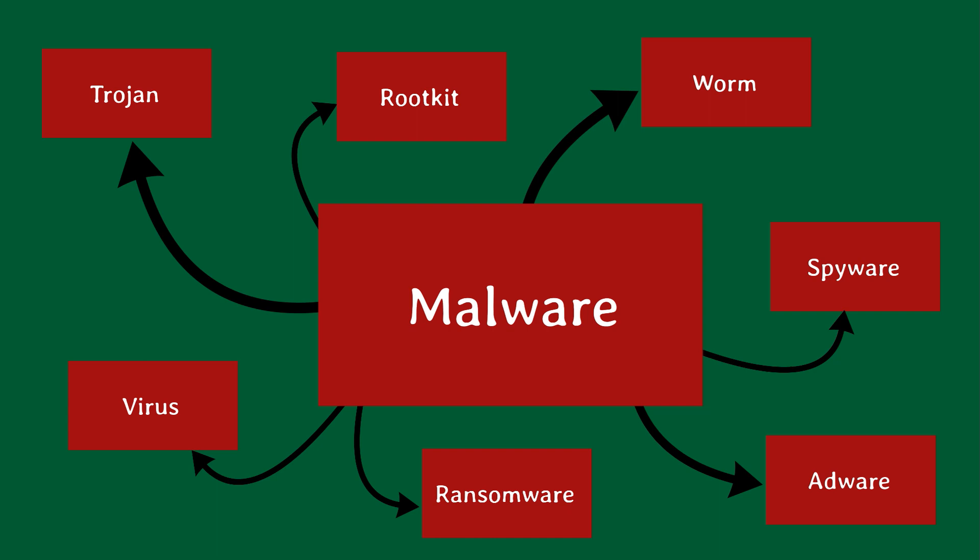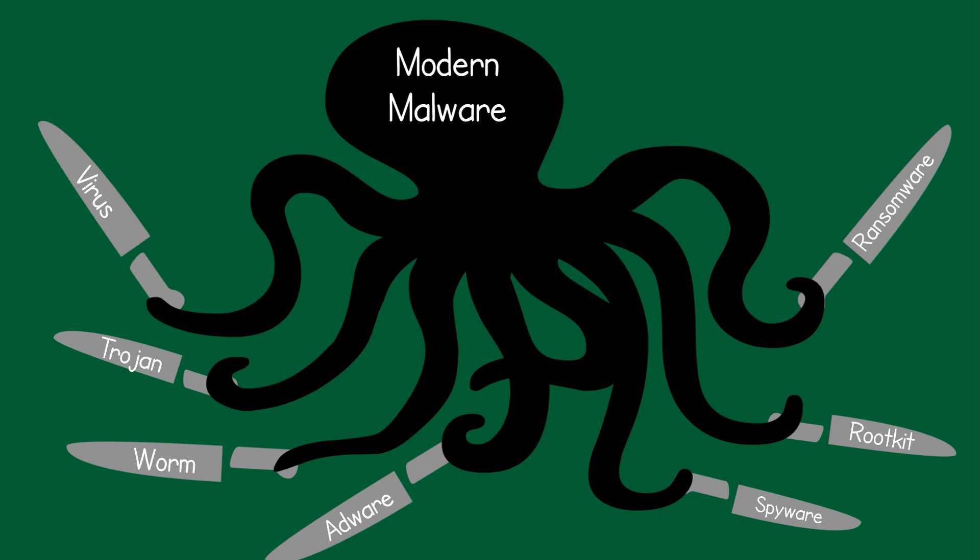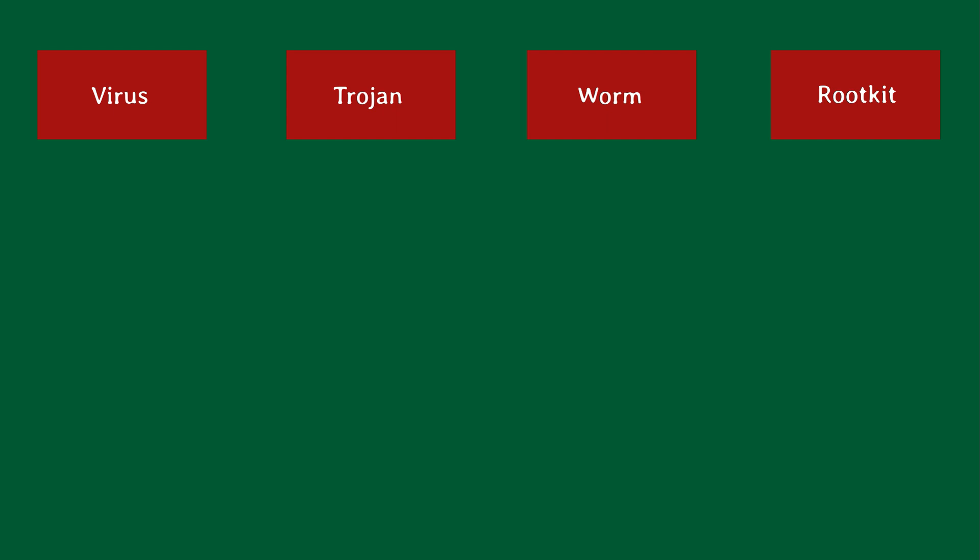But before we get into the specifics of how they operate, realize that modern malware often has a variety of characteristics. So while definitions are useful for understanding, realize that a single piece of malware can often take on many different forms. Having said that, let's take a quick look at some of the defining characteristics for some of the most common malware.